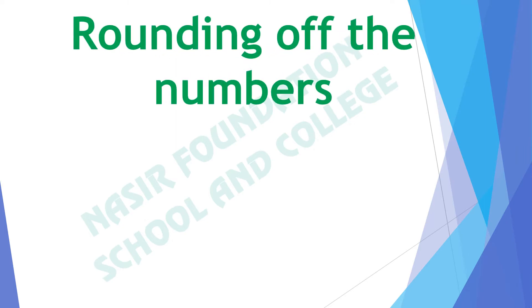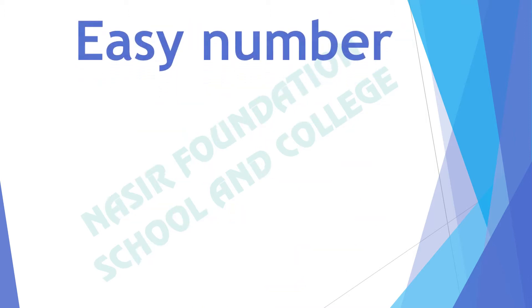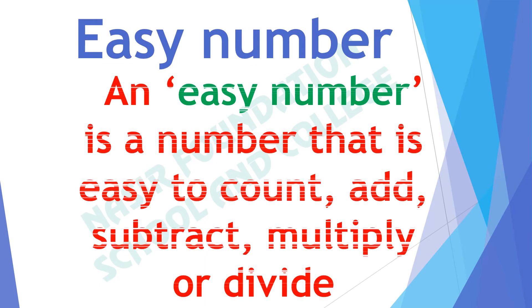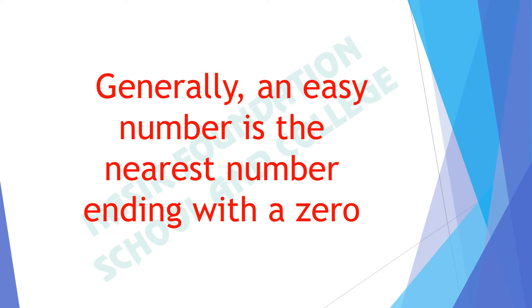What does round off mean? Round off means to bring a number to the nearest easy number. An easy number is a number that is easy to count, add, subtract, multiply or divide. Generally, an easy number is the nearest number ending with a zero.